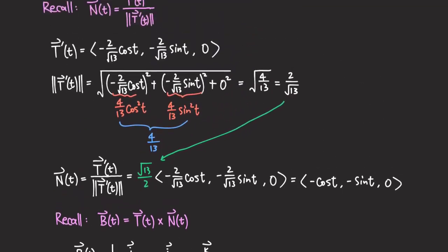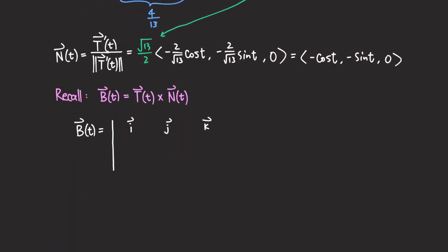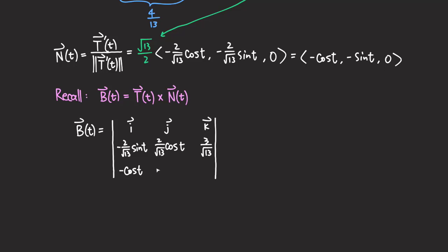The second row is the T vector: negative 2 over radical 13 sine t, 2 over radical 13 cosine t, and 3 over radical 13. The third row is the N vector: negative cosine t, negative sine t, and 0.